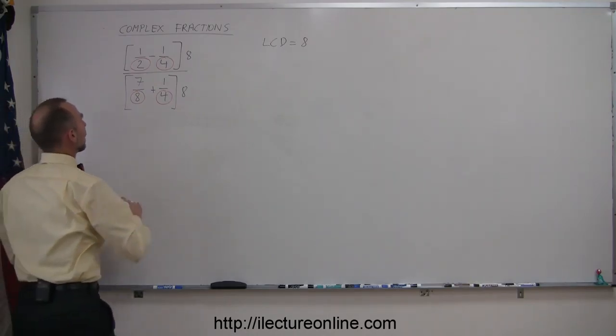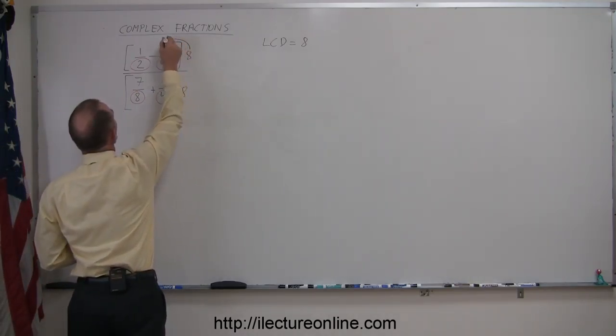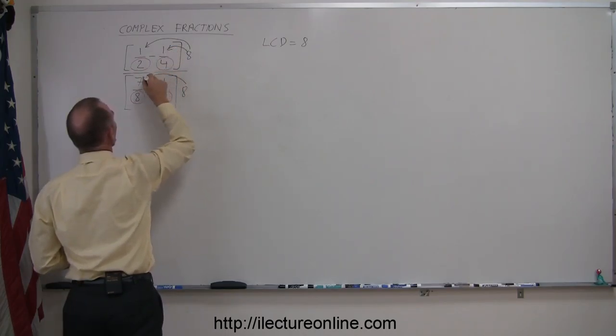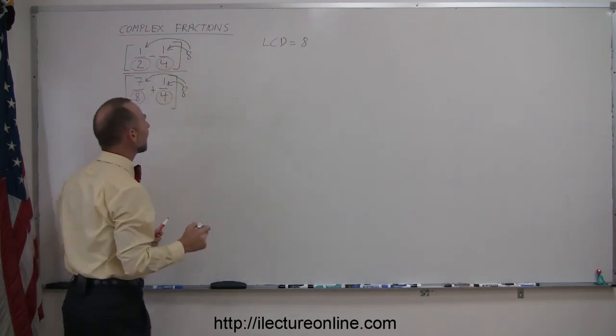Now, when I multiply this 8 times 1 half, and this 8 times the negative 1 quarter, and over here, the 8 times 7 eighths, and the 8 times 1 quarter, what do we get?